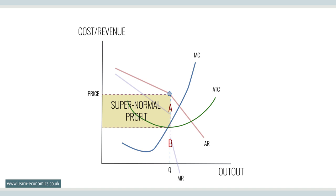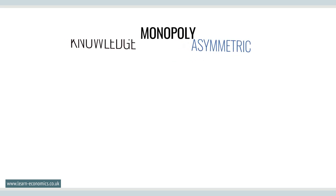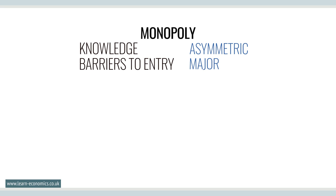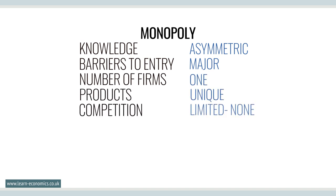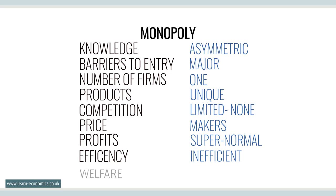For monopoly, knowledge is asymmetric, with a monopolist able to control information. Major barriers to entry exist, including limit pricing, vertical integration along the supply chain, and control of key resources including infrastructure. Firms are price makers. Supernormal profits are likely. Firms are not allocatively or productively efficient and there is a welfare loss as price is greater than marginal cost.